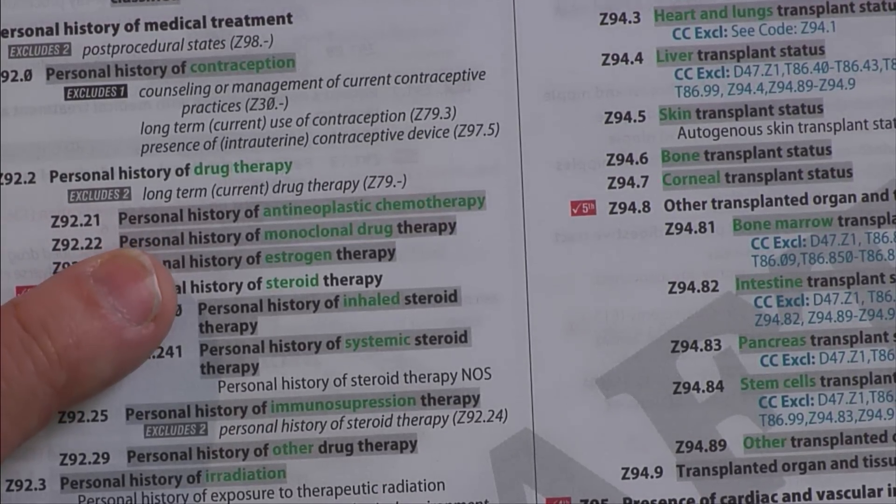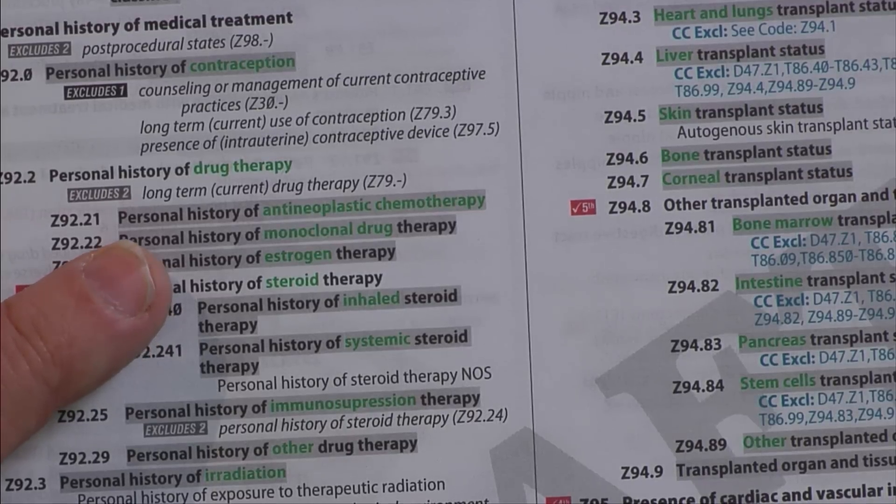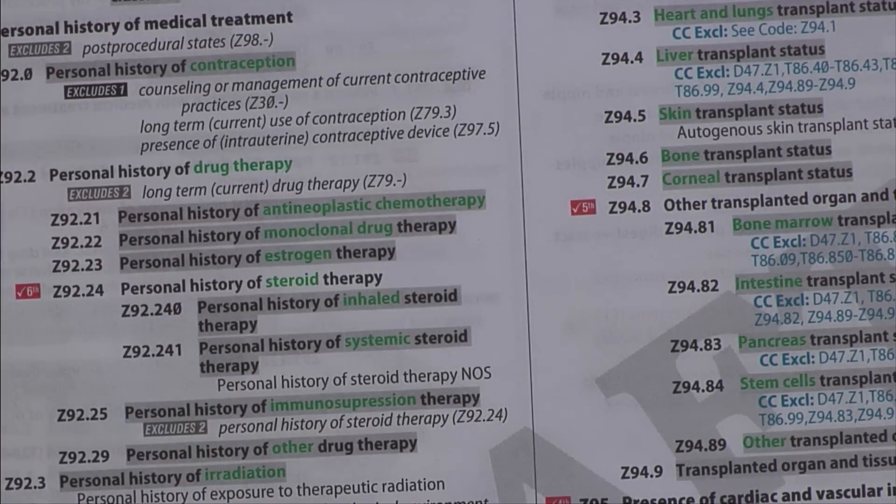It's a complete code — there's no check mark next to it showing I need additional characters, and there are no additional notes to pay attention to. So I have my four codes: C79.31 as the principal diagnosis, and then as other diagnoses Z85.3, Z90.12, and Z92.21. And that completes the coding of this scenario.